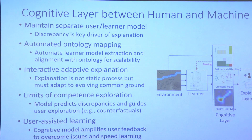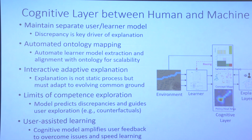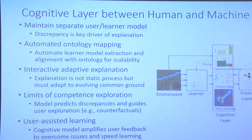We built common ground between the deep learner—the AI—and the human user by maintaining cognitive models for both. Cognitive models had already been used to represent human cognitive processes, for example in intelligent tutoring systems. But we realized there was enough of an analogy between ACT-R's abstract symbolic and sub-symbolic representation and the representation of a deep learner that we could build parallel models, with explanation driven by the discrepancy between them.